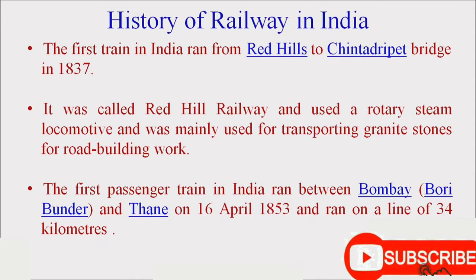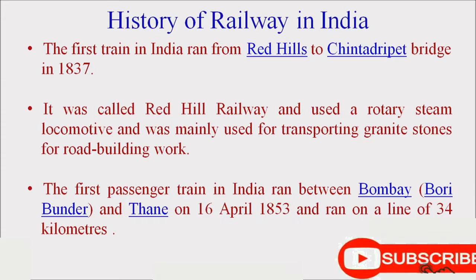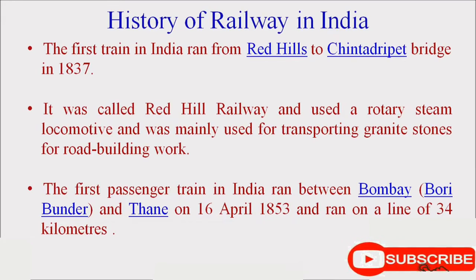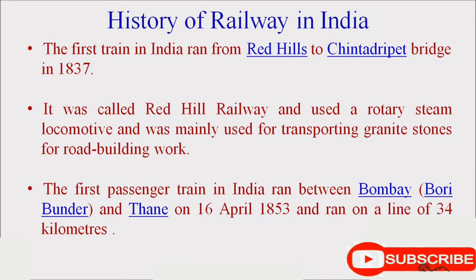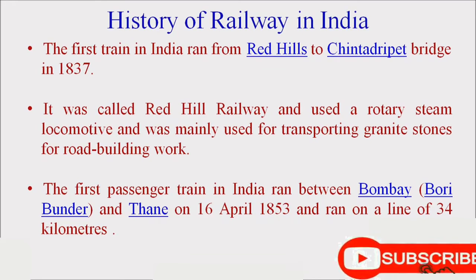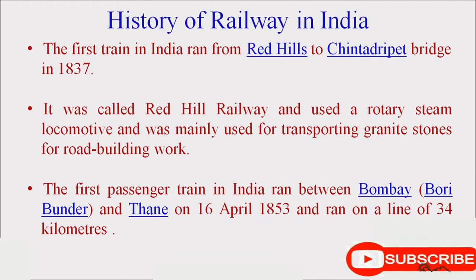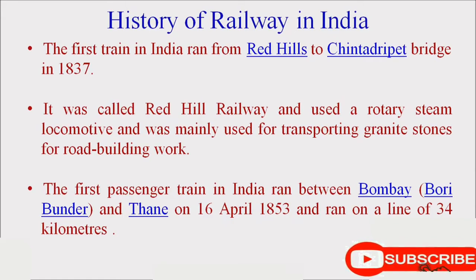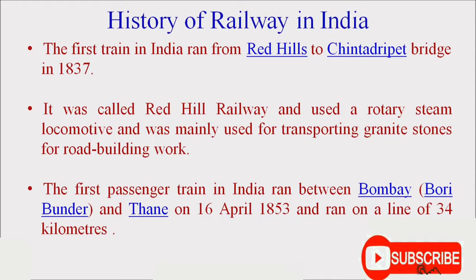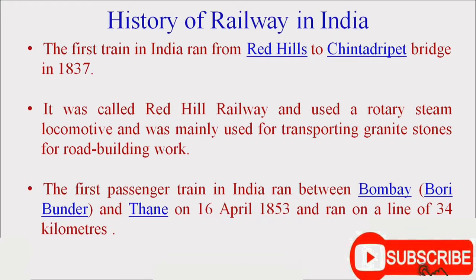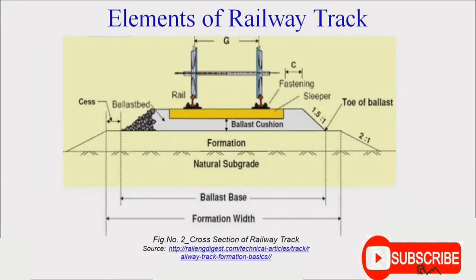The first train in India ran from Red Hills to Chaitradipet Bridge in 1837. It was called the Red Hill Railway and used a rotary steam locomotive, mainly used for transporting granite stones for road building works. The first passenger train in India ran between Bombay and Dhanay on 16th April 1853, over a span of 34 kilometers.